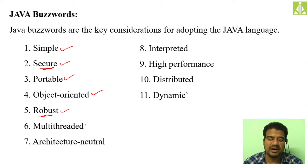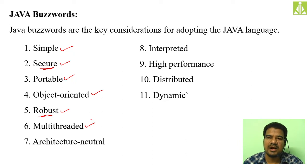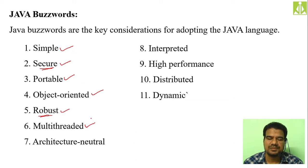Then 'multi-threaded.' We will discuss this when it comes in our regular discussion. Simply remember a thread as a separate way of executing your program — a way of executing your program. We have processes and we have threads. A process is a heavyweight entity whereas a thread is a lightweight entity.